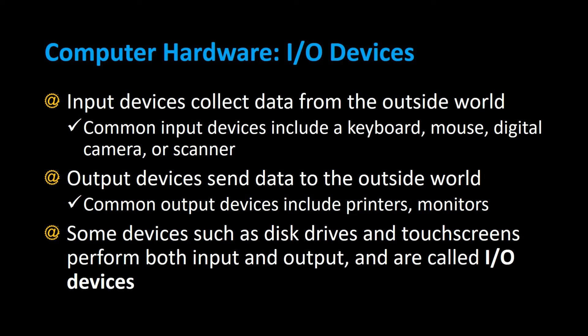A digital camera lets you upload photos to your computer, or a scanner lets you scan documents to the programs on your computer, and all of it is going into your program as input. Output devices send data to the outside world — for example, a printer or a monitor. When you're printing something out, it's going from your program on your computer to the printer, or to your monitor to be displayed.